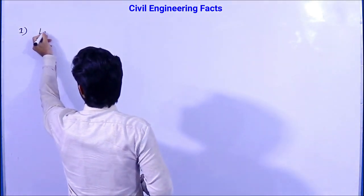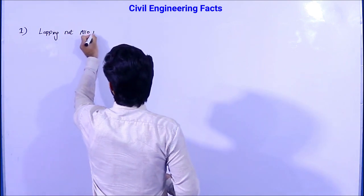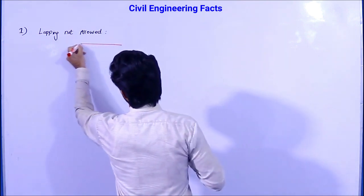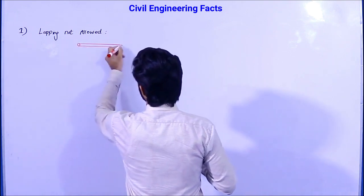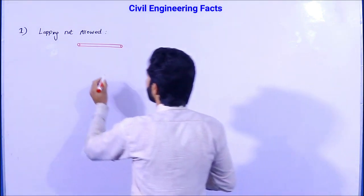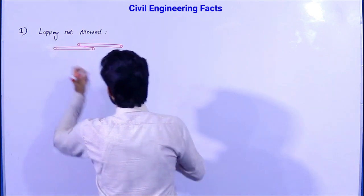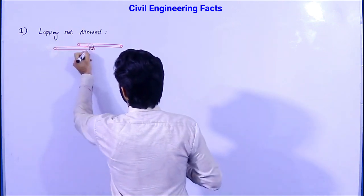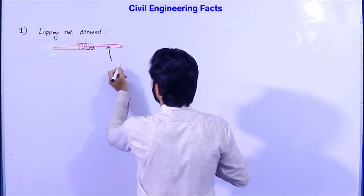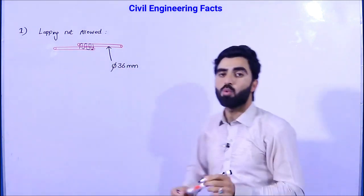The first fact is about lapping. Lapping is not allowed in certain cases. What is lapping? This is one steel rod — we have a standard length of steel rod from the factory, which is 12 meters. To increase the length, we overlap one steel rod to another to get the full length and bind them. Lapping is not allowed when the diameter of the steel rod is more than 36 mm.